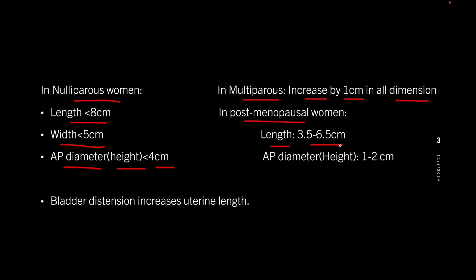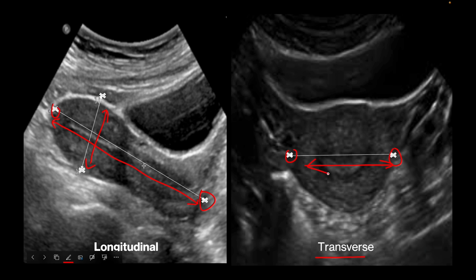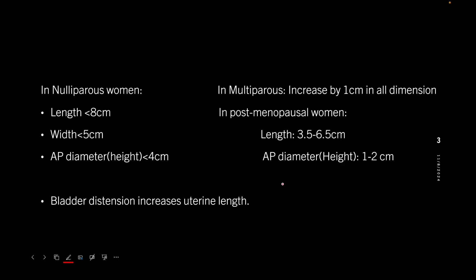After menopause, the uterus atrophies and the length can range from 3.5 to 6.5 centimeters, and its AP diameter or height is usually between 1 to 2 centimeters. Remember the rule of 8-5-4: 8 for length, 5 for width, and 4 for height of the uterus.